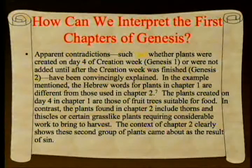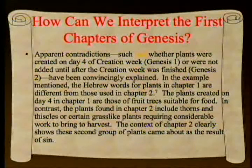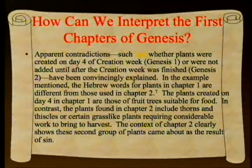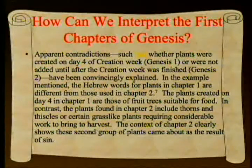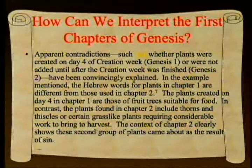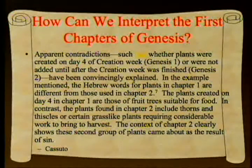The plants created on day three in chapter 1 are like fruit trees suitable for food. In contrast, the plants in chapter 2 include thorns and thistles, or certain grass-like plants requiring considerable work to bring to harvest. The context of chapter 2 clearly shows these second-group plants came about as a result of sin—something that's been known since the time of Umberto Cassuto, though people haven't always looked at it carefully.